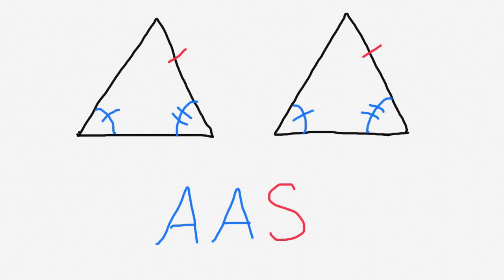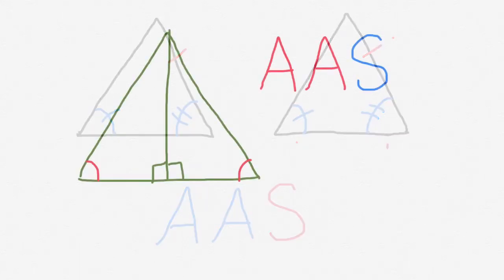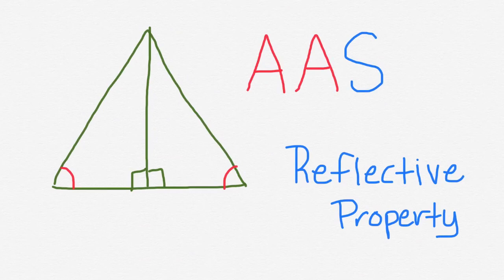Here we have two angles and a side. By our markings, the order is angle, angle, side — so this is going to be an Angle-Angle-Side postulate. Again, the order matters: angle, angle, and then side. Here is an example of two triangles together. The markings indicate we have an angle, then a right angle, and a shared side. Since we have a reflective property, that side is congruent to itself. So we now have angle, angle, and side — a congruency by the Angle-Angle-Side postulate.